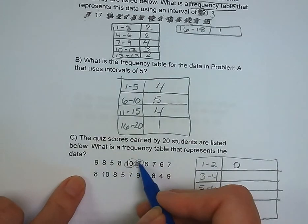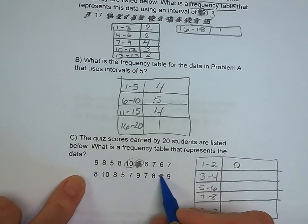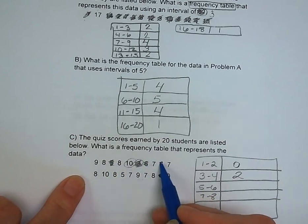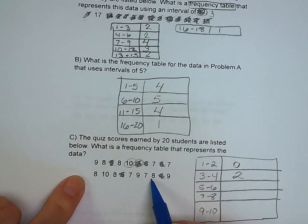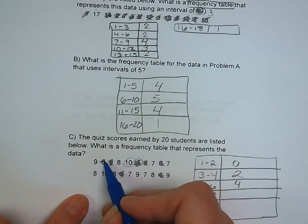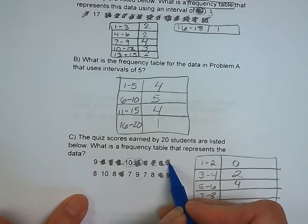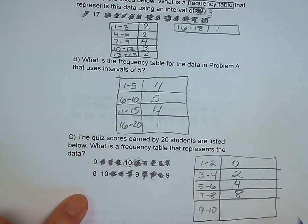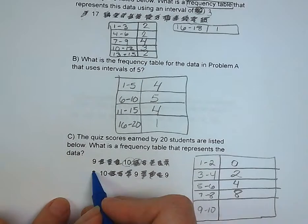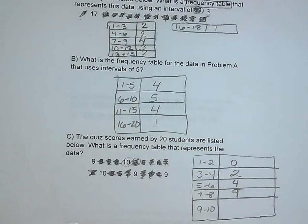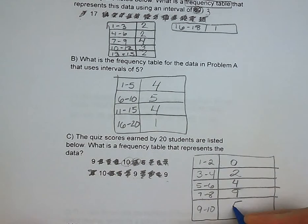Now we just need to count up. How many are between 1 and 2? Zero. How many are between 3 and 4? 2. How many are between 5 and 6? 4. How many are between 7 and 8? 9. And lastly, how many are between 9 and 10? 5.